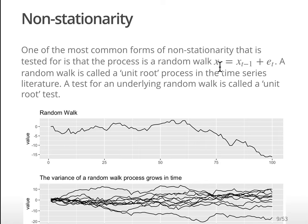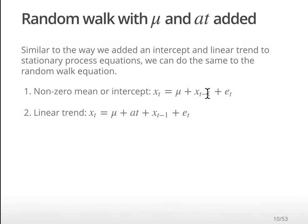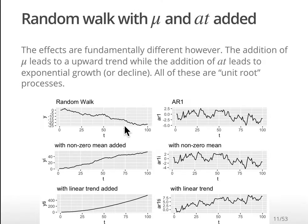Here's the random walk: it's just Xt equals Xt-1 plus an error term. There is no phi term. In the same way that we had the non-zero mean and the linear trend for stationary processes, we can add those terms to a random walk. But they don't turn out to be linear trends - we can add that mean term or we could add an a-times-t term.